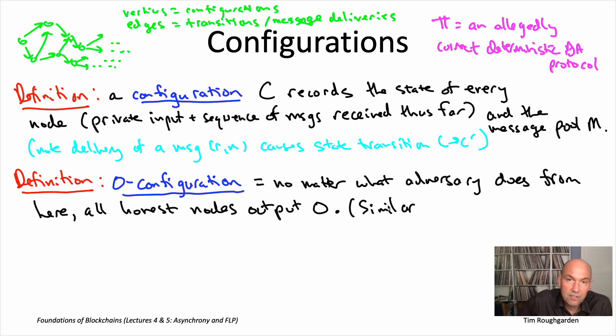One configurations, of course, are defined in the same way. Those are configurations where the adversary has no ability to force the all zero output. No matter what the adversary does, the honest nodes are going to all output one.